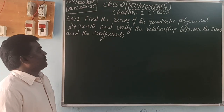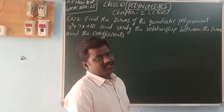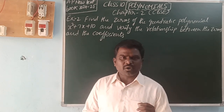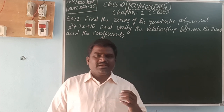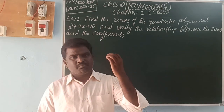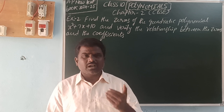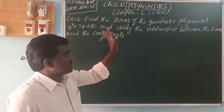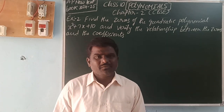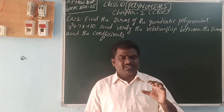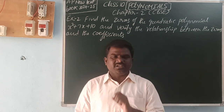Example 2: find the zeros. Zero means what? The value of the variable. The value of the variable of a polynomial is called a zero, or root, or solution. The numerical value you can substitute in the polynomial that makes it zero is called the zero, root, or solution.